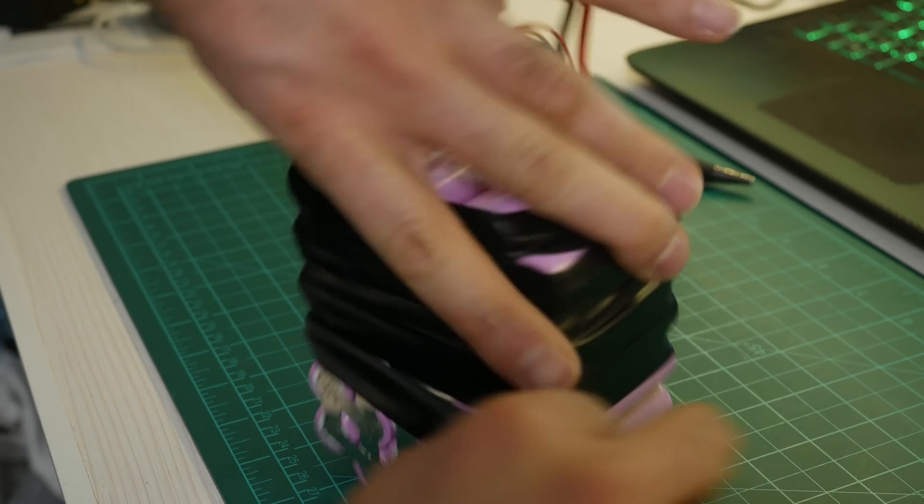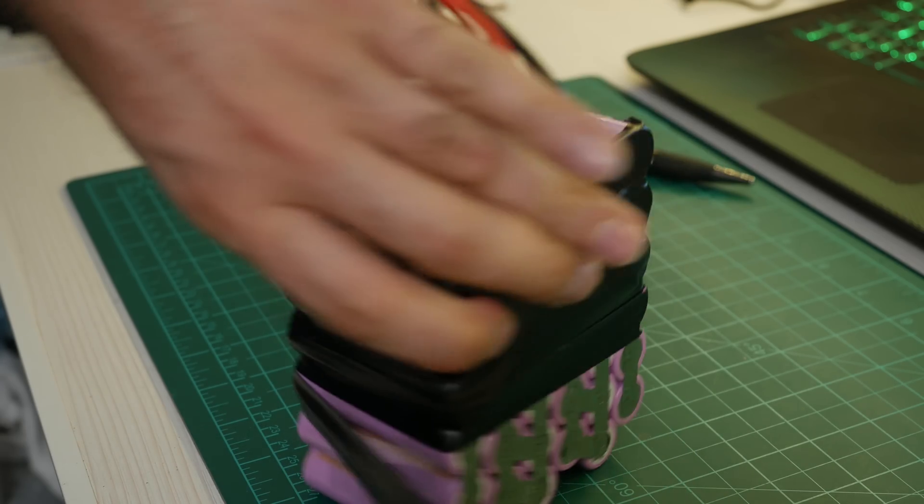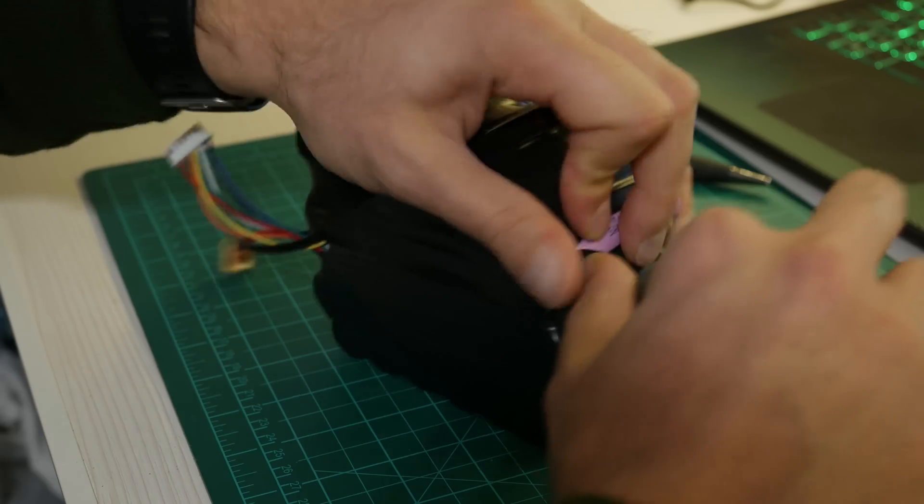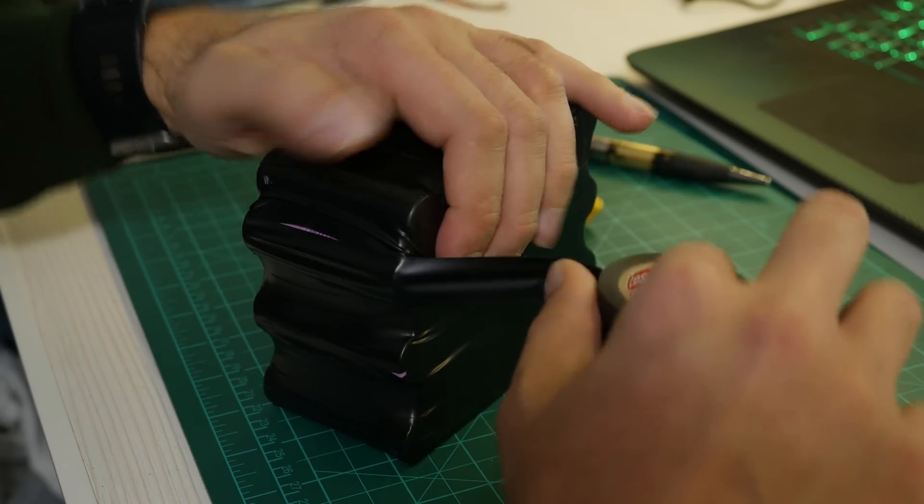Once this was done due to lack of properly sized heat shrink I used electrical tape to wrap the battery pack making sure I isolate it well on all sides to avoid possible issues in the future.